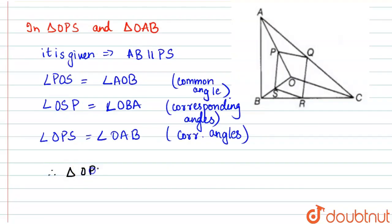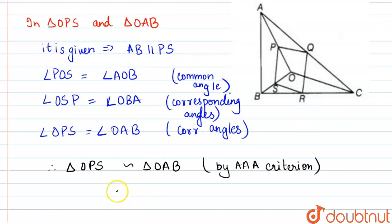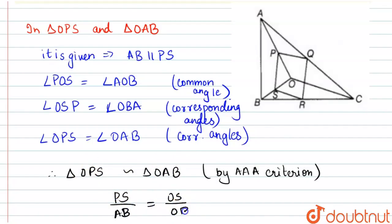Therefore, triangle OPS is similar to triangle OAB by AA similarity. From this we get: OS by OB — we'll call this equation 1.